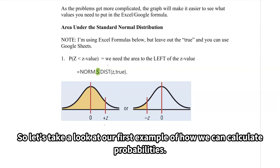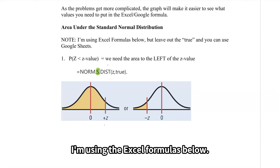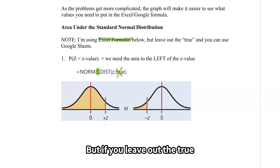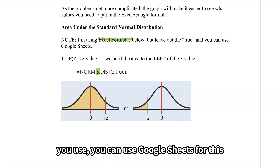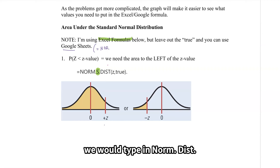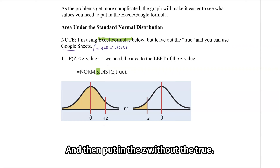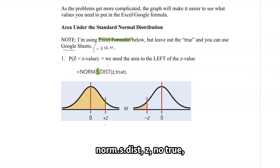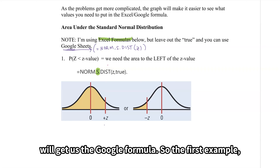Let's take a look at a first example of how we can calculate probabilities. I'm using the Excel formulas, but if you leave out the 'true' at the end of the argument, you can use Google Sheets for the very same thing. For Google, we would type norm.dist and then put in the z without the 'true' — norm.s.dist z, no true, will get us the Google formula.